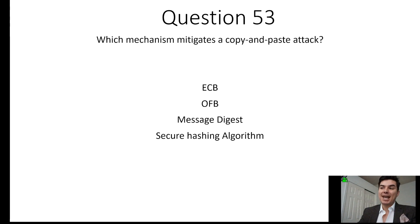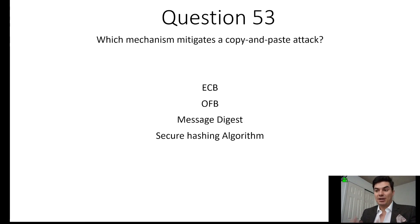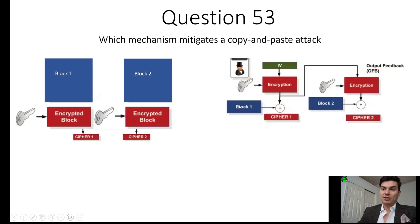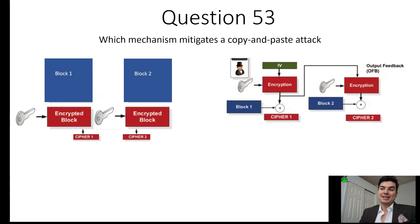Question 53: Which mechanism mitigates a copy-and-paste attack? Right off the bat, we want to eliminate Message Digest and Secure Hashing Algorithm, because those are hashing algorithms used for integrity purposes. So we know it has to be either ECB or OFB. We're going to look at the two different mechanisms and what exactly a copy-and-paste attack is — they are receiving the data or the cipher and slowly trying to decipher it.